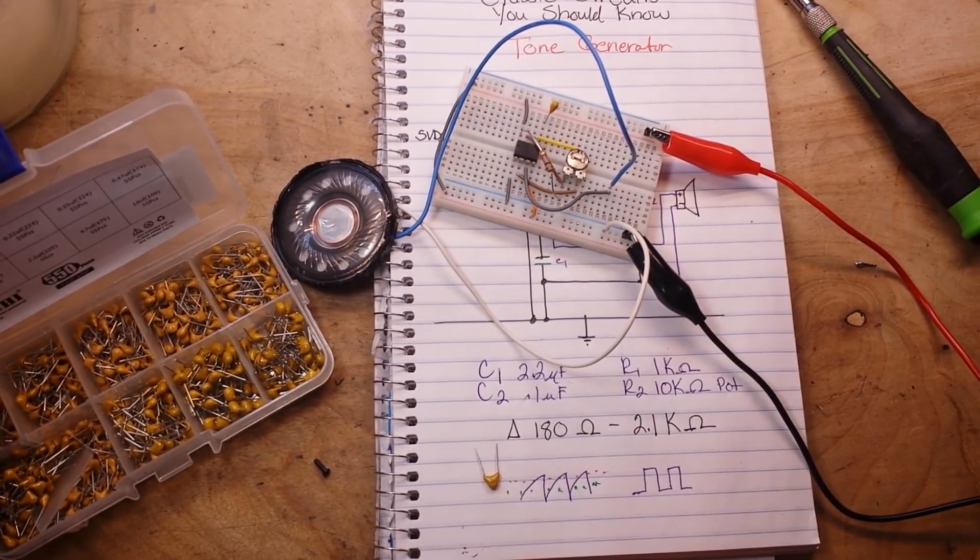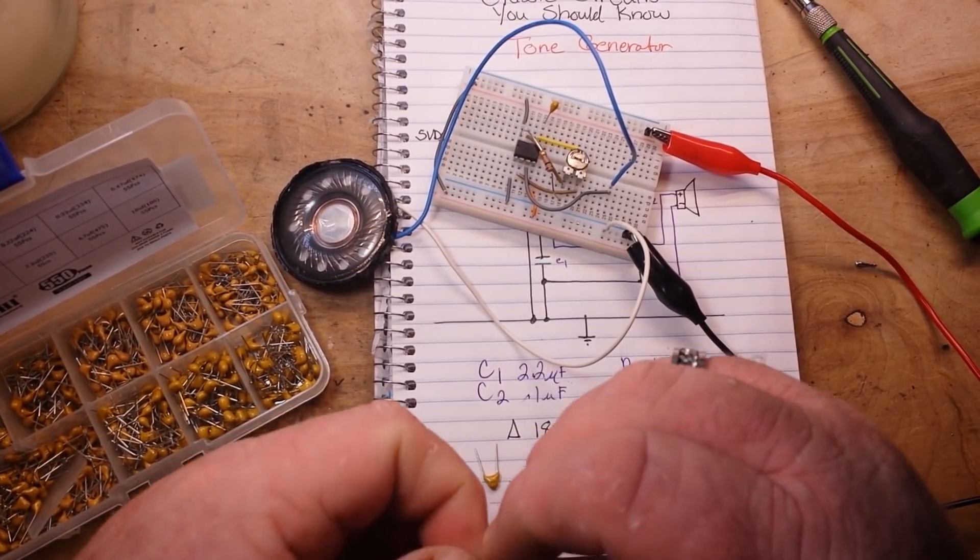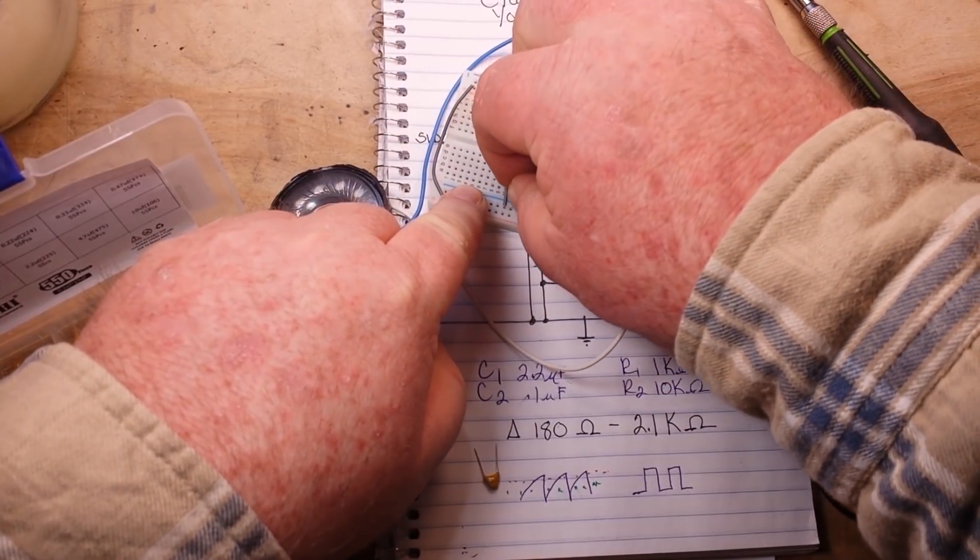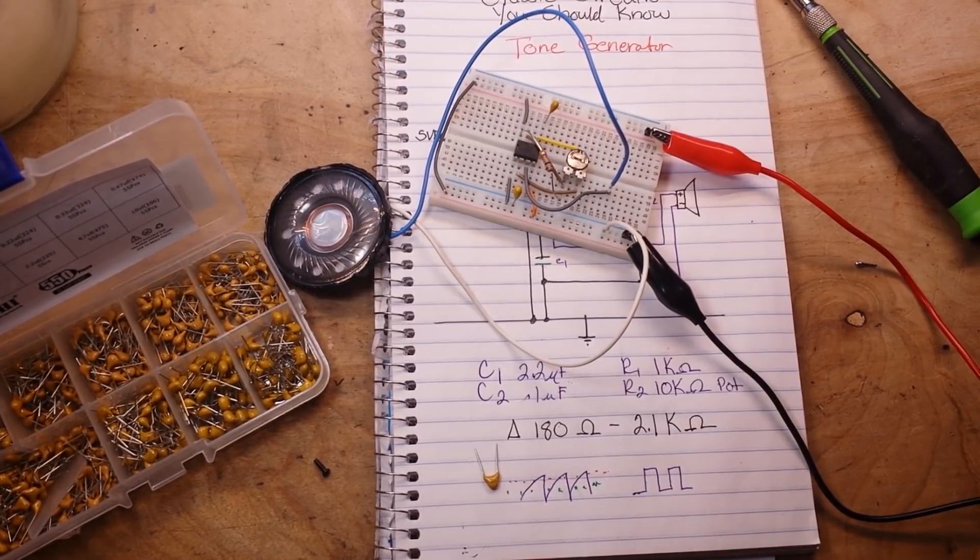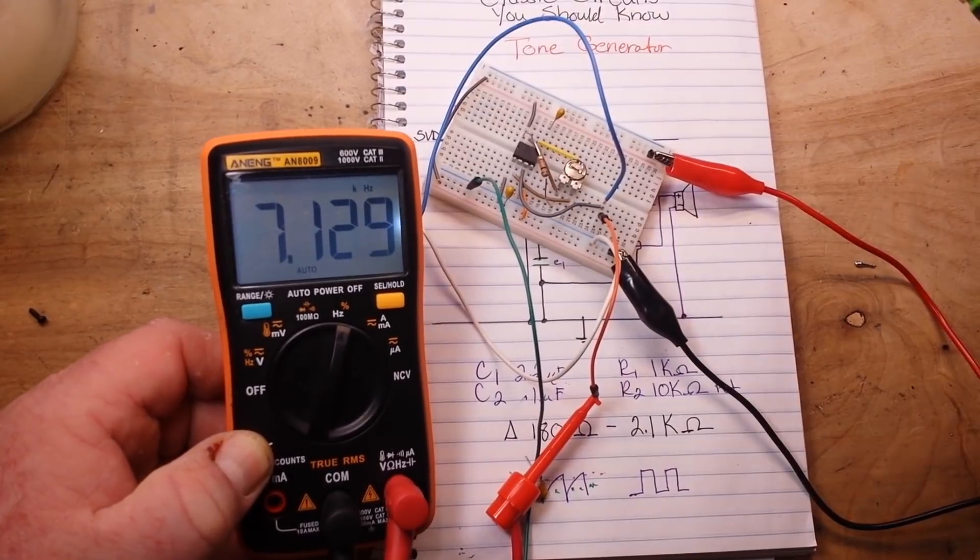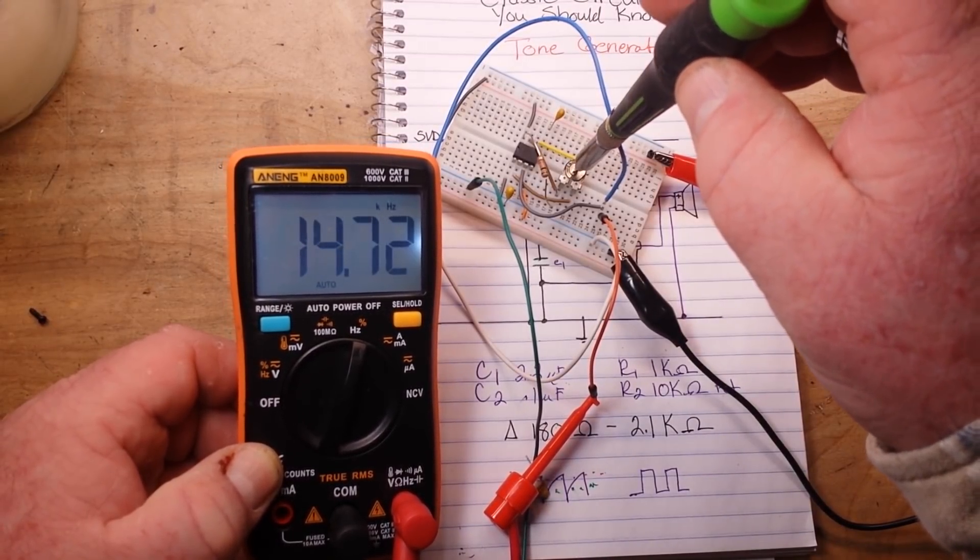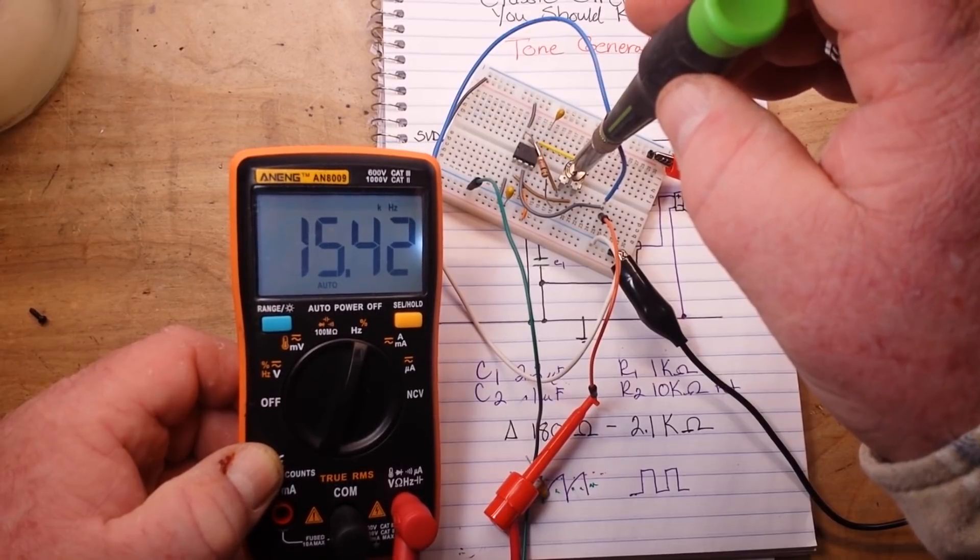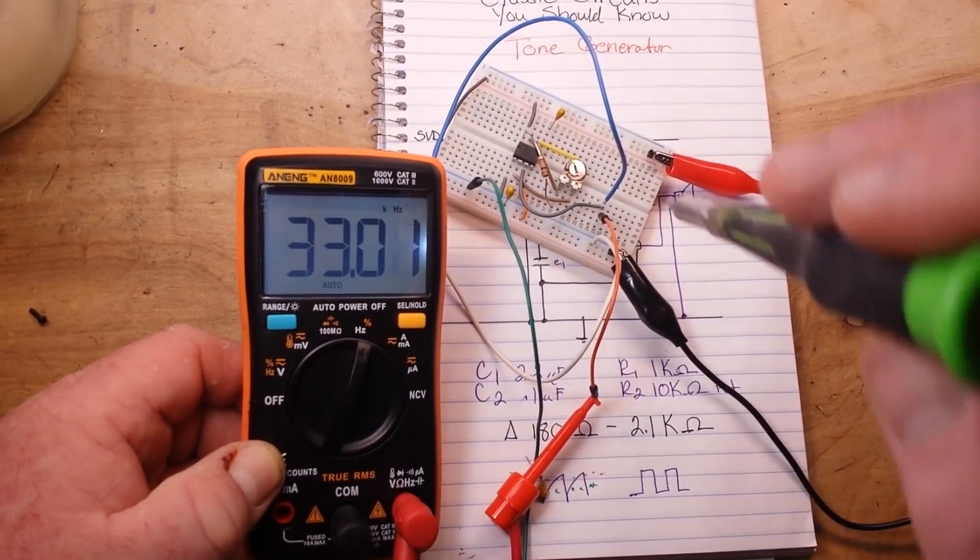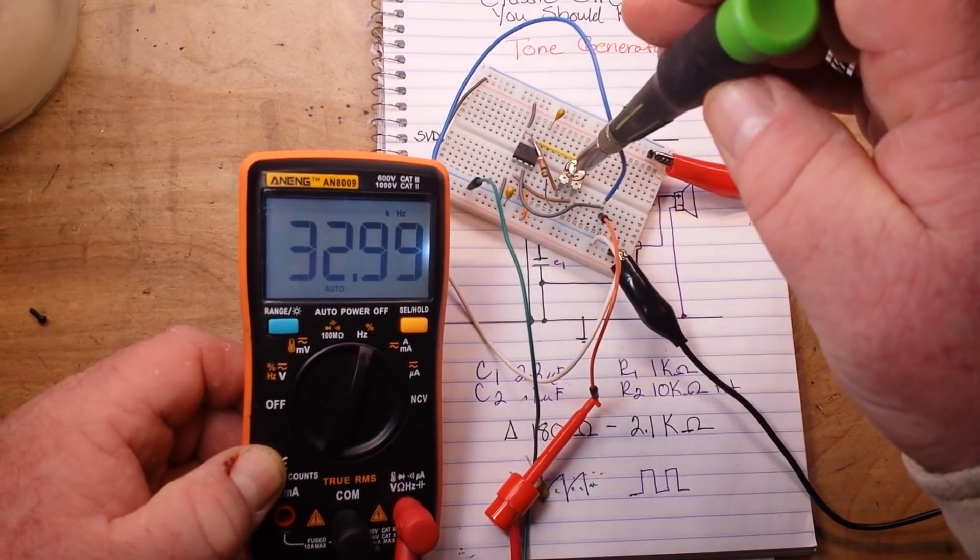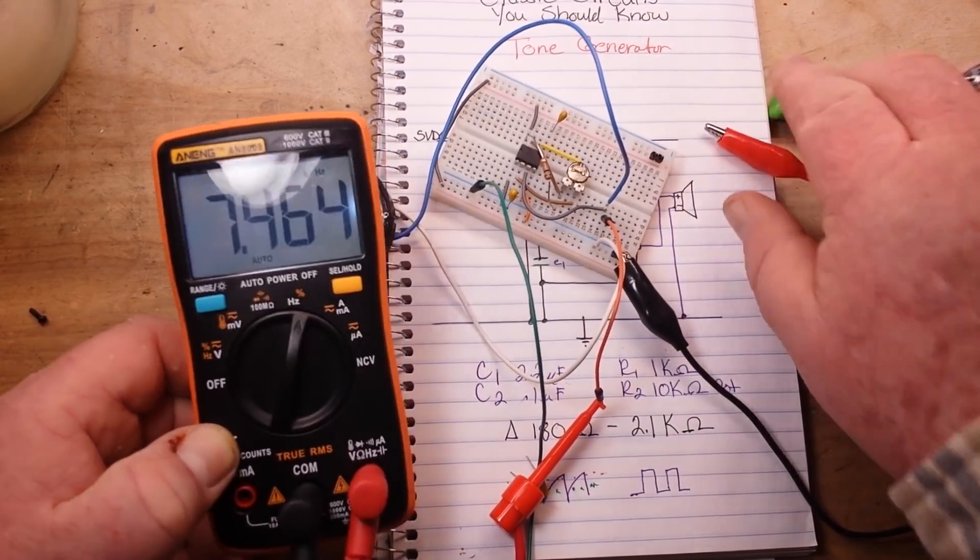And then if I put in the smallest one I got here which is a 0.1 microfarad, it should be quite a bit higher. There you go let's take a look at what this one is. So we're up to 7k. Now I can't hear it anymore. Some of you guys with younger ears might be able to hear it. We're up to 33 kilohertz, pretty much ultrasonic in that range. Very very cool.